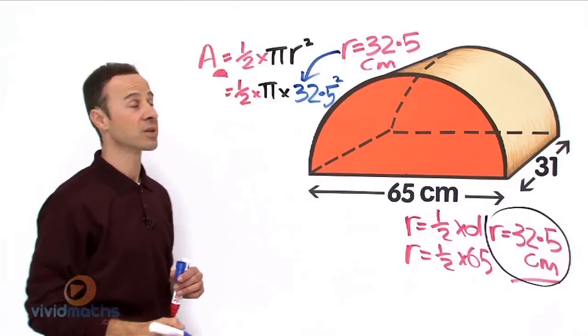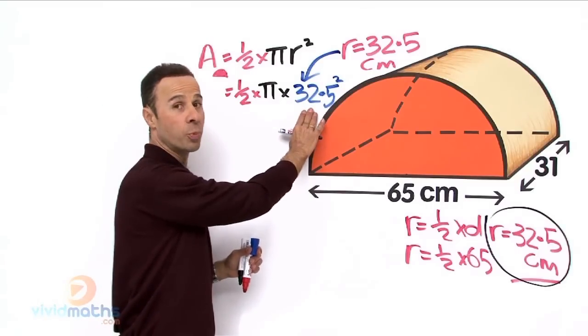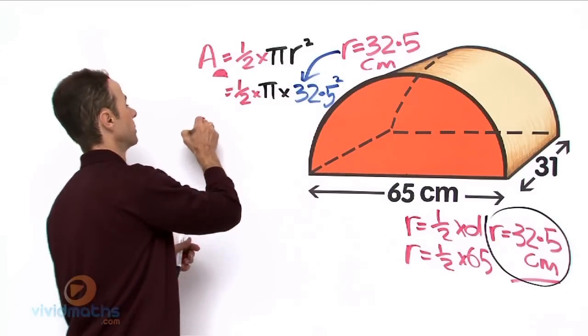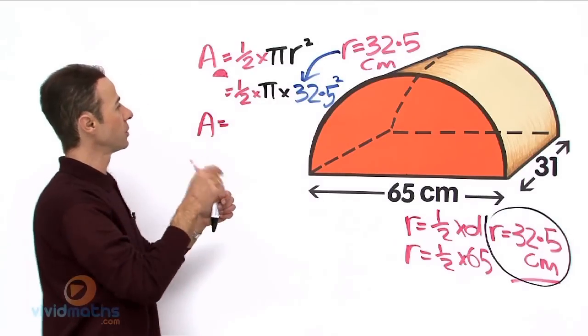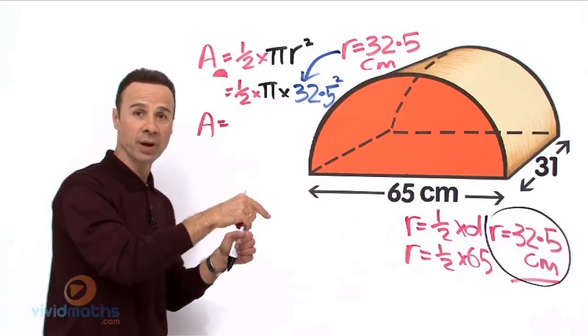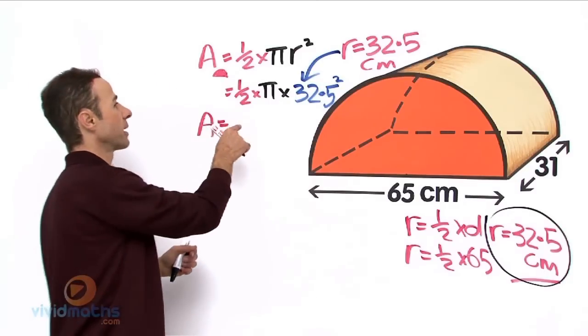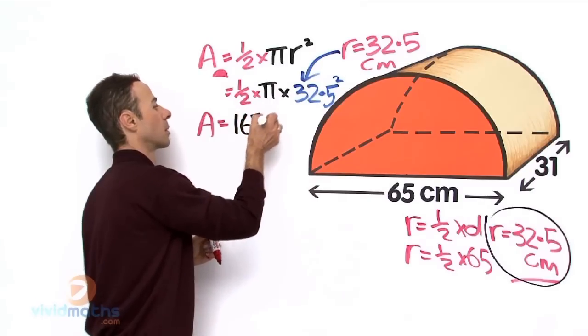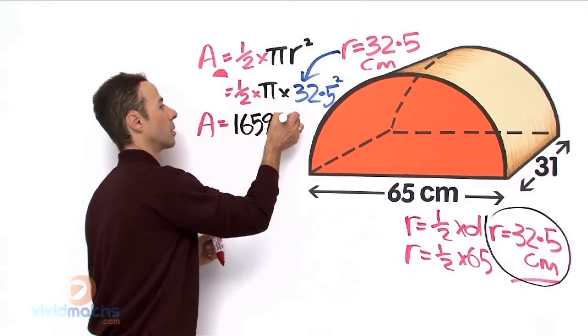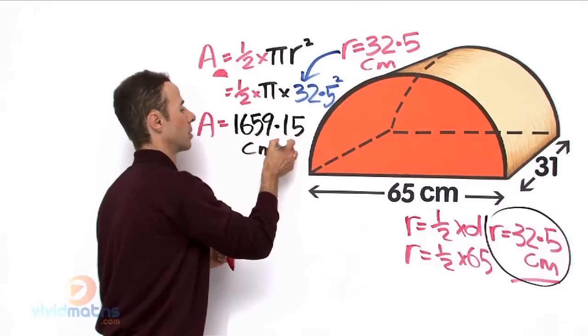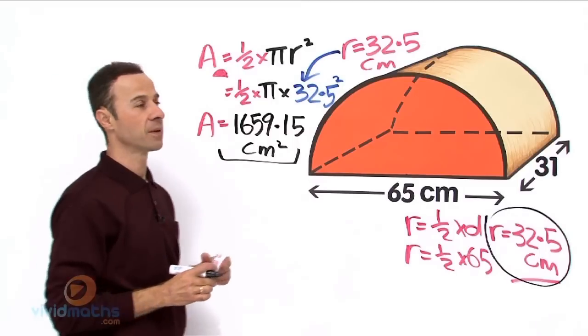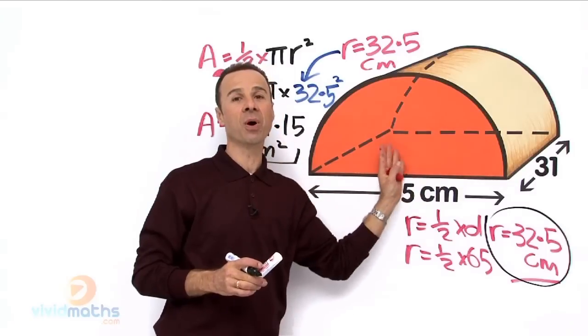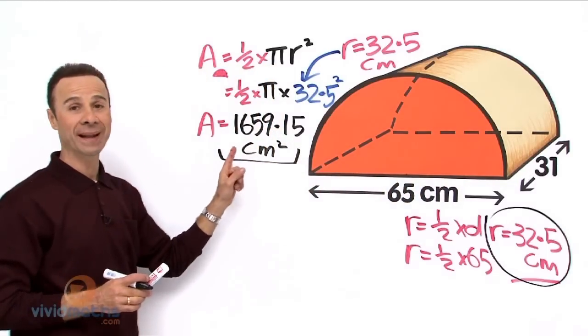And always remember to square it because it's a half times π times 32.5 all squared and that's going to give us an answer of ½ × π × 32.5² equals on your calculator 1659.15 cm². There's our front face right over there. Now later on we are going to double it because we got the face at the back, so both those faces are the same so we are going to need to double that later.